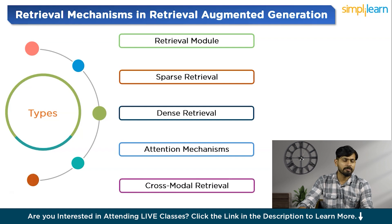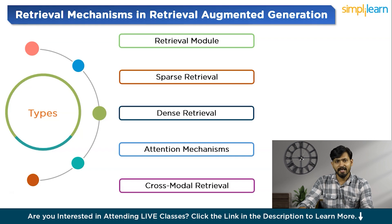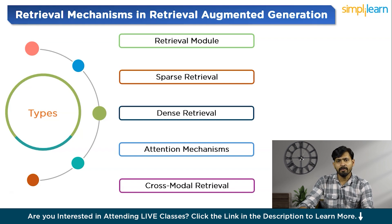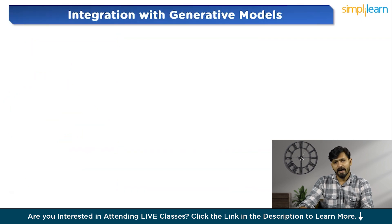Finally, RAG may incorporate cross-modal retrieval mechanisms to retrieve information from multiple modalities such as text, images, or structured data. This enables the model to access diverse sources of knowledge and integrate them seamlessly into the generation process, resulting in more comprehensive and contextually relevant output. By leveraging these retrieval mechanisms, RAG enhances the model's ability to generate high-quality responses and excel in NLP tasks including question answering, text summarization, and dialogue generation.